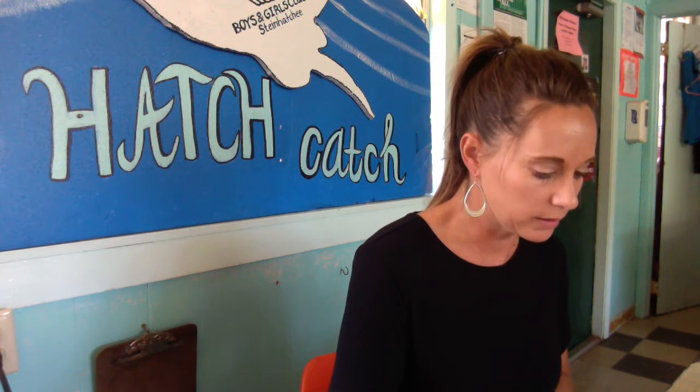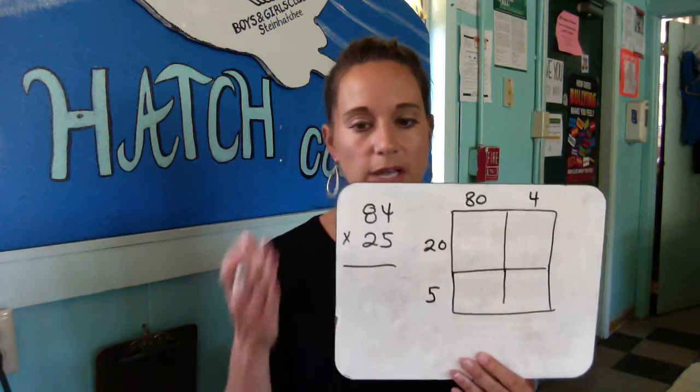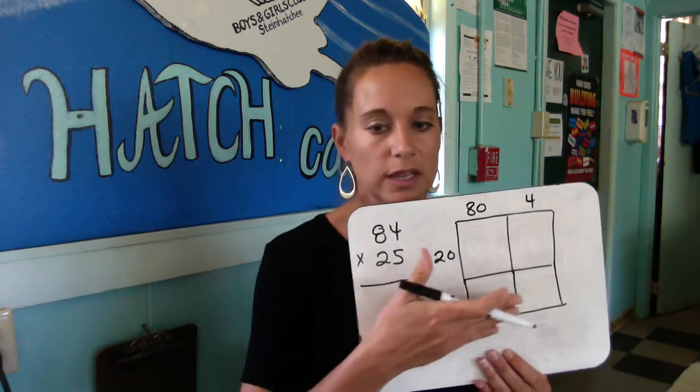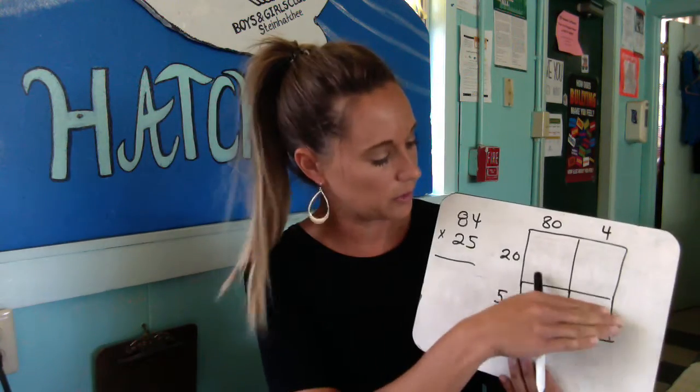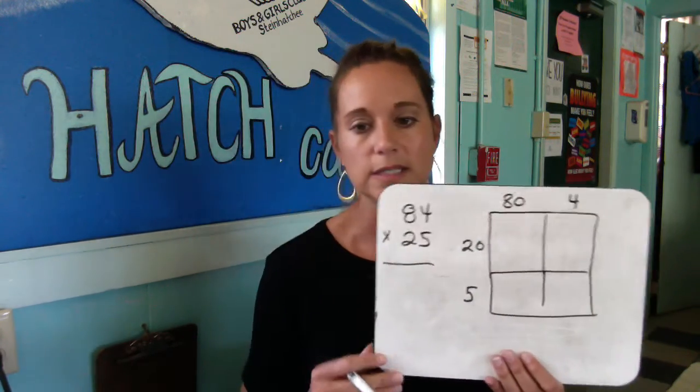Let's do a couple more examples — I'm going to try my best to show you as many examples as I can. The next one is going to be a two-digit times a two-digit: eighty-four times twenty-five. For this one we're going to have to draw an extra section of boxes, so now you actually have four boxes instead of two.